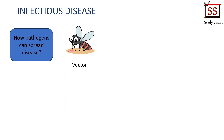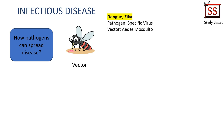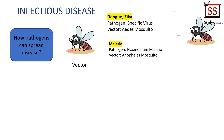Pathogens can also be transmitted through vectors — animals that carry pathogens and transmit them. Diseases such as dengue and Zika are transmitted by Aedes mosquitoes. Anopheles mosquitoes transmit Plasmodium, which causes malaria.